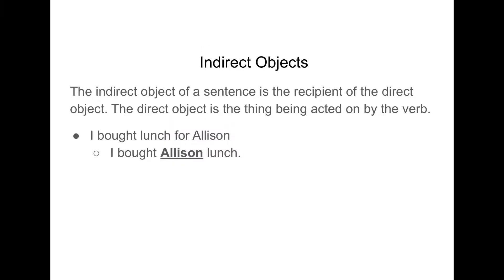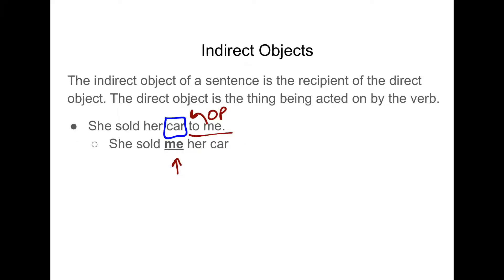Same thing in this sentence: I bought lunch — with the prepositional phrase for Allison. But if we move it over and drop the preposition, I bought Allison lunch. Does it make sense to say I bought Allison — that's who I bought? No. What you bought was lunch, and who received the lunch? That's Allison. In the same way that what she sold was the car, and who received the car was me.